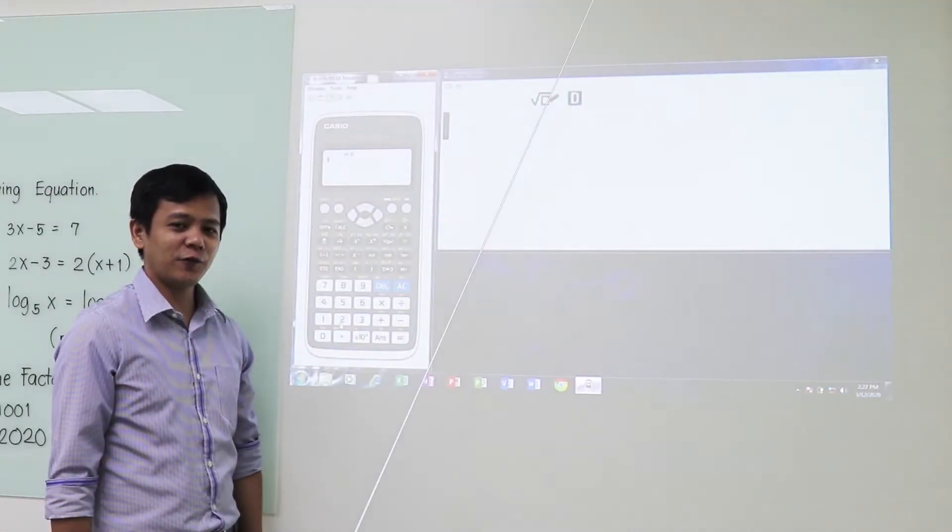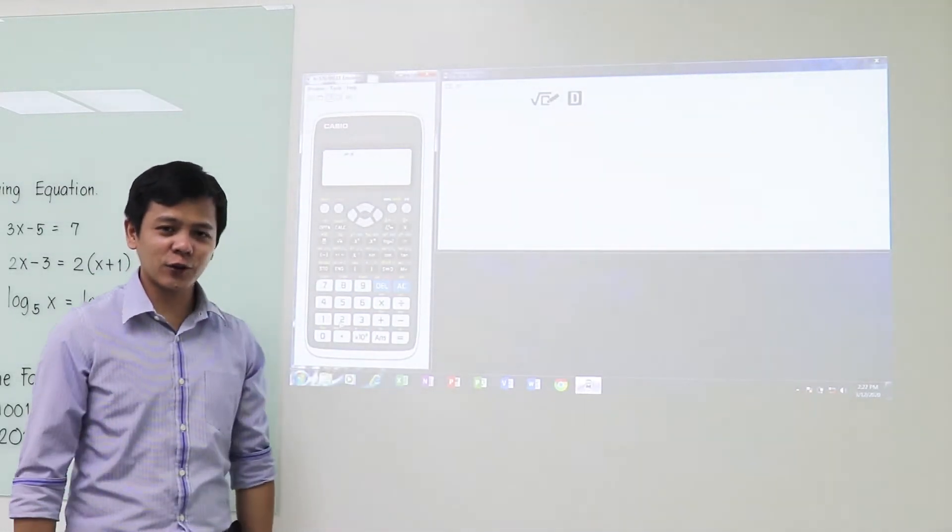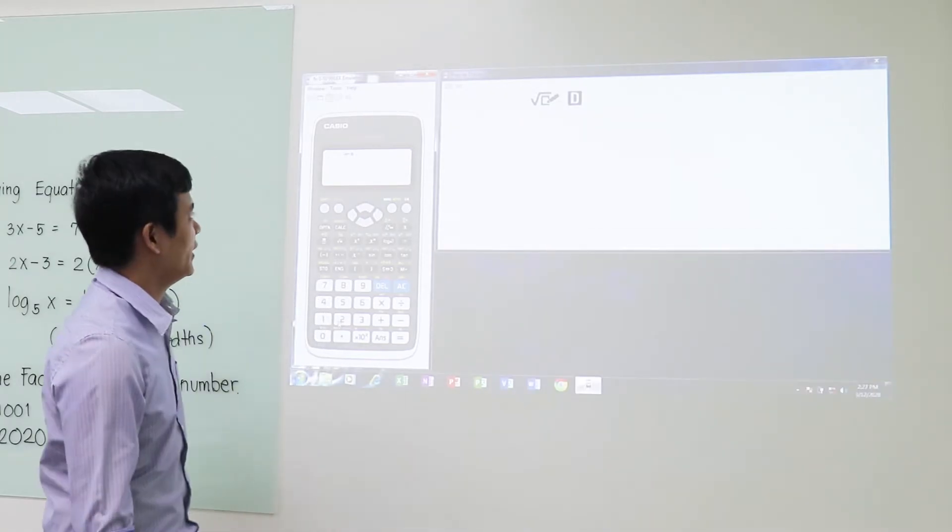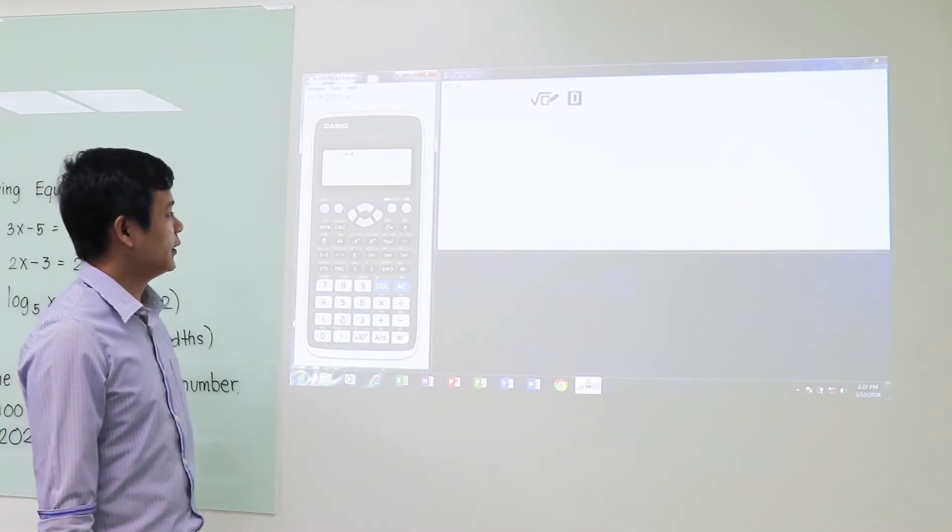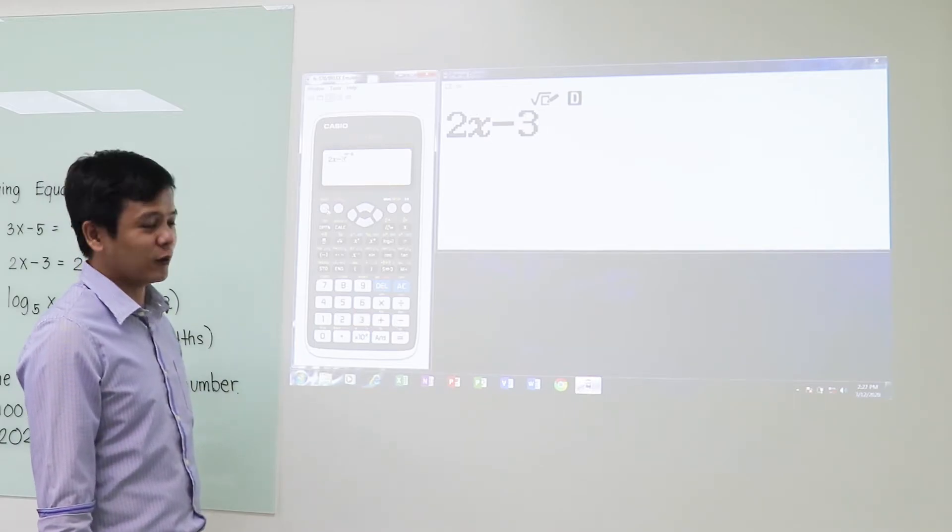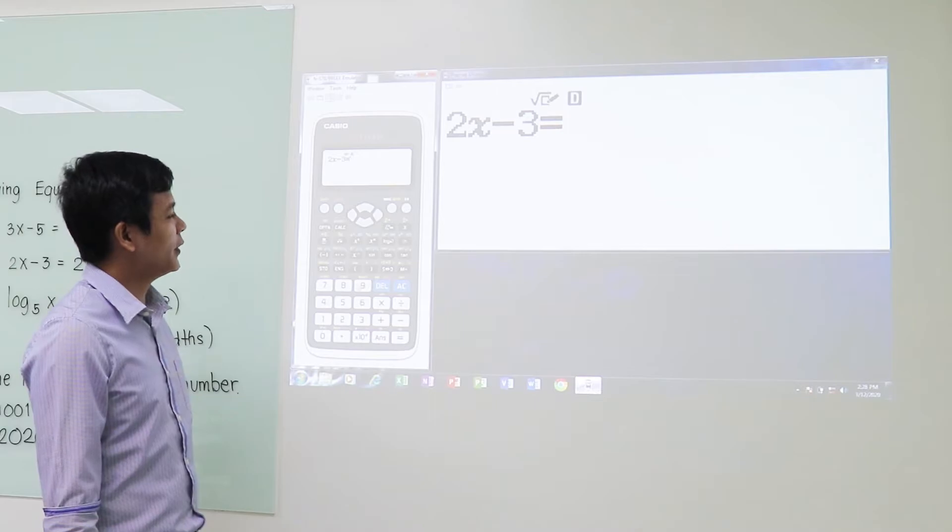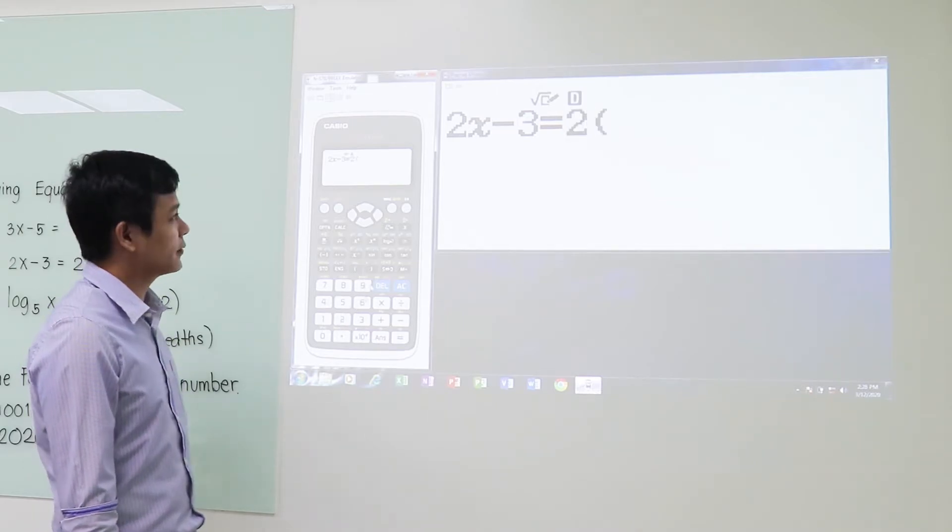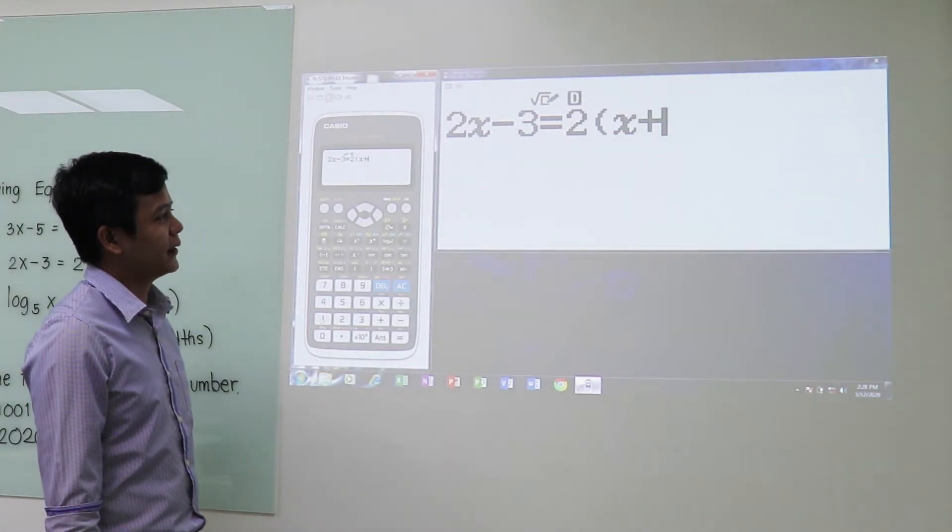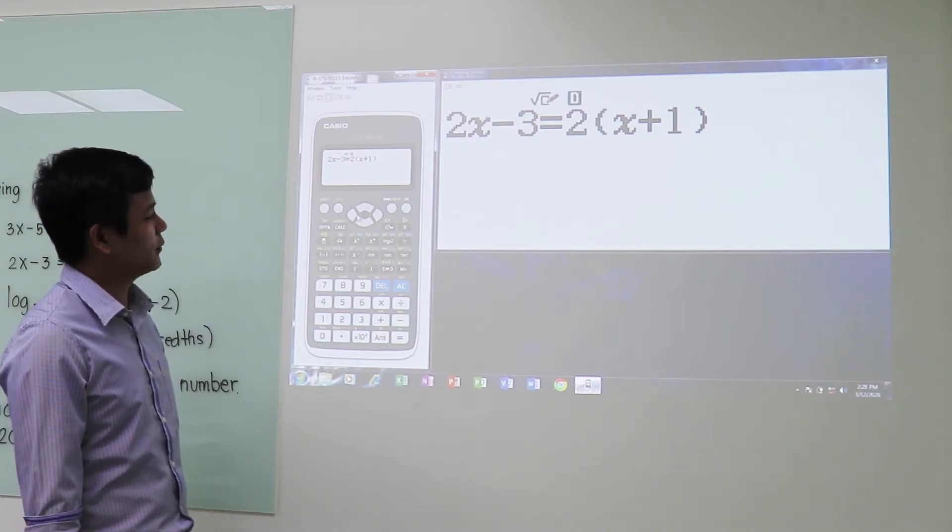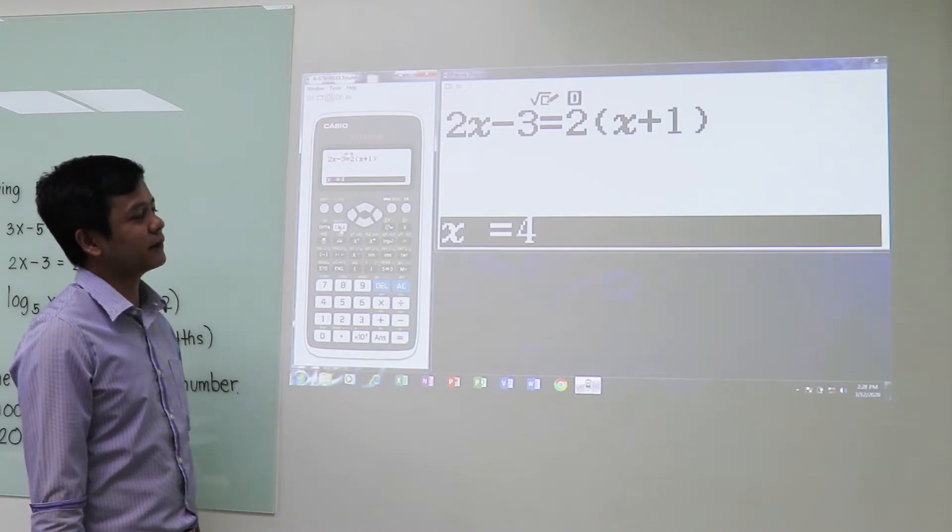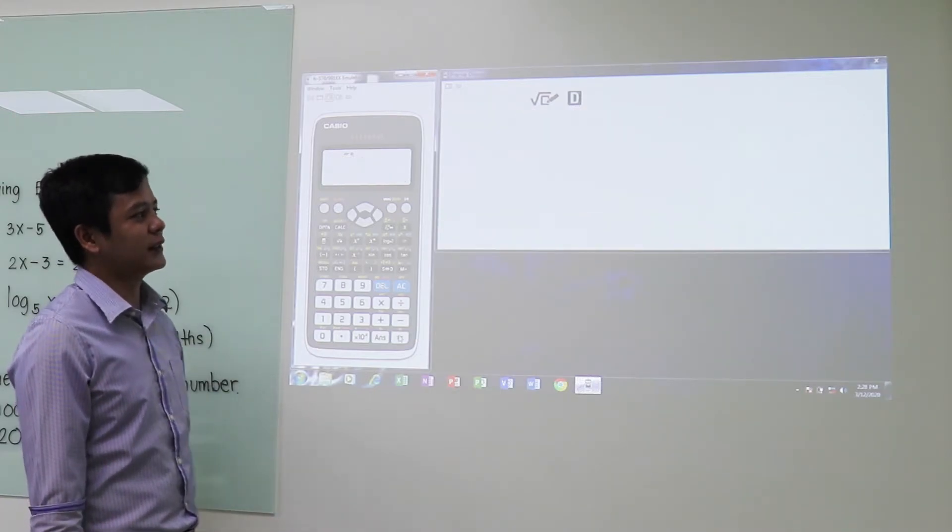Okay, for our next problem, we have 2 times the quantity x minus 3 is equal to 2x plus 1. So let us solve again. Press the key 2, then x minus 3 is equal to 2x quantity x plus 1. All right, so again, for us to be able to find the answer, we need to press shift and then solve. And then again, this is the answer.